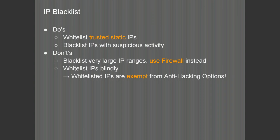There are some do's and don'ts with the IP blacklist. We recommend that you whitelist any trusted static IP addresses, for example remote offices. If you see any IPs with suspicious activity, blacklist them. However, don't blacklist very large IP ranges — it is recommended to use your firewall instead to prevent this traffic from even entering the network. Don't whitelist IPs blindly — investigate every IP address coming in. Note that whitelisted IP addresses are exempt from the anti-hacking options, so do thorough research about each IP.